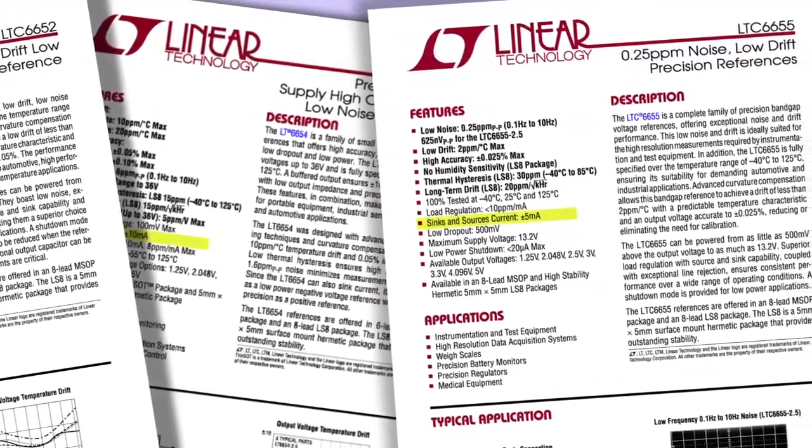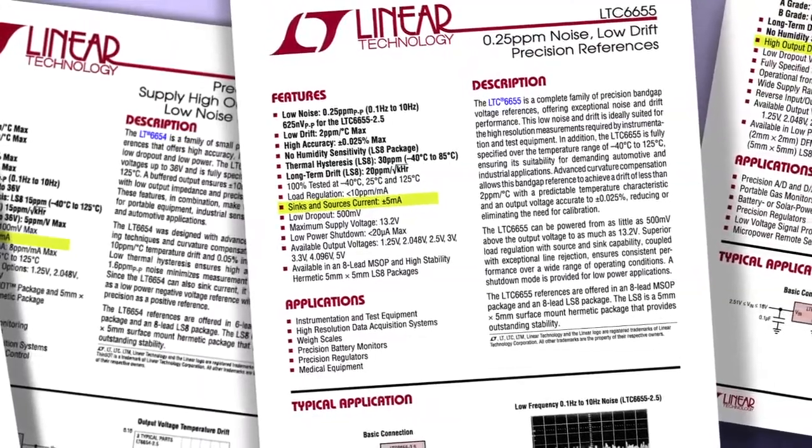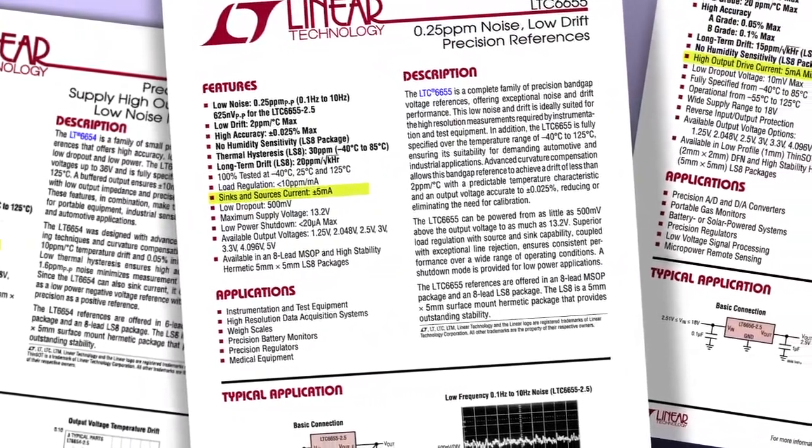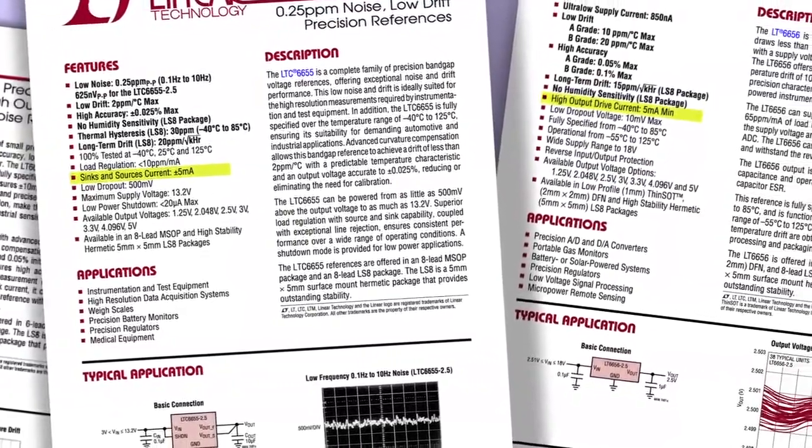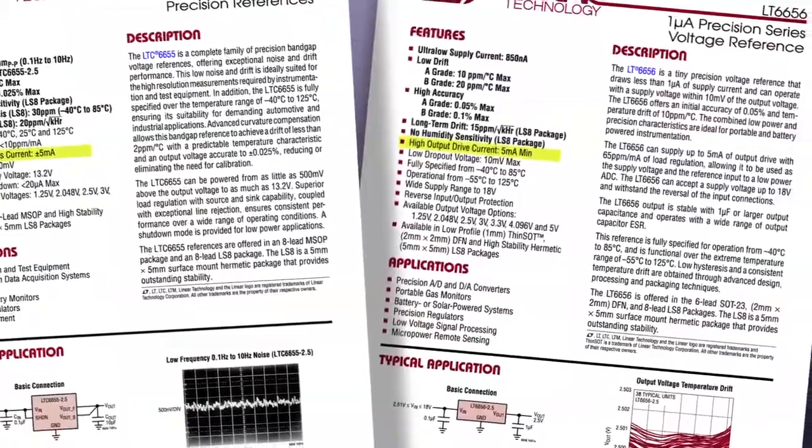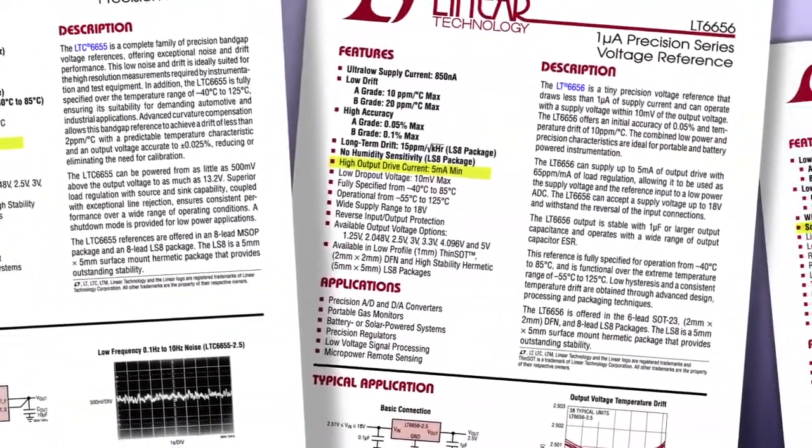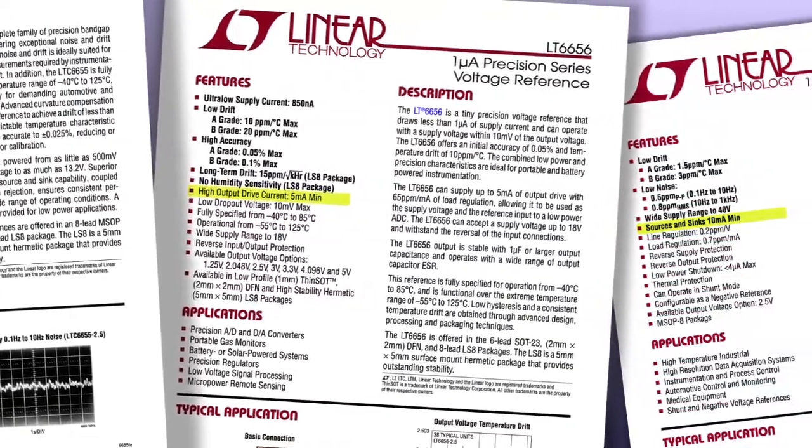An LDO is designed to work at as low an input voltage as possible while providing substantial output current at a reasonably accurate voltage. In contrast, a voltage reference optimizes precision, usually at the expense of available output power. Most data acquisition and monitoring circuits require both functions.